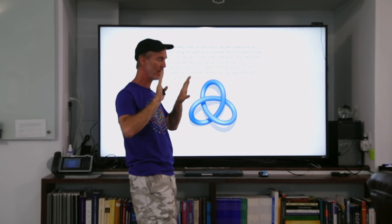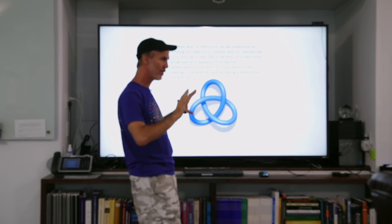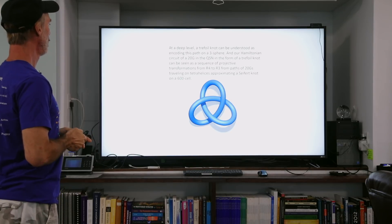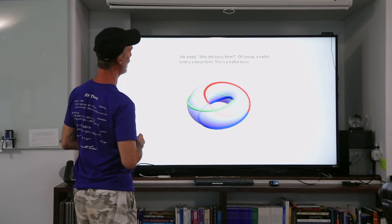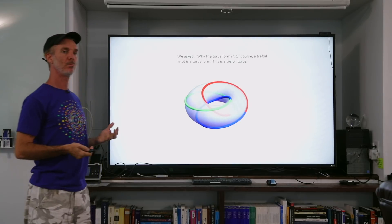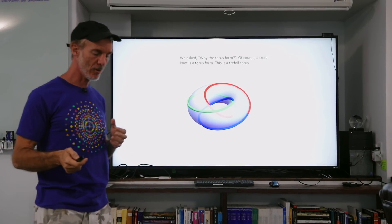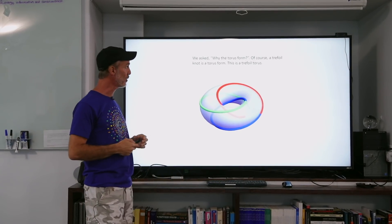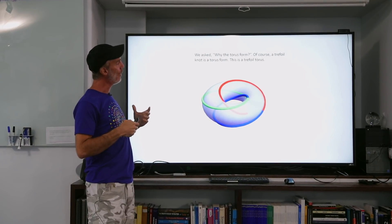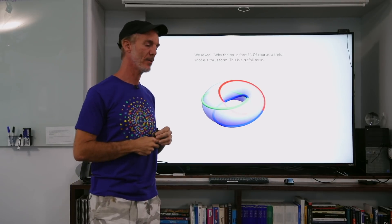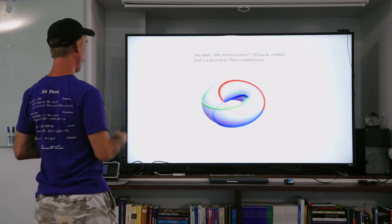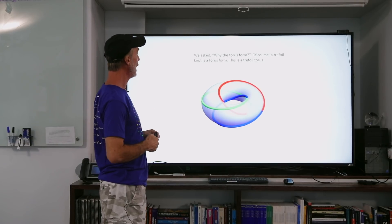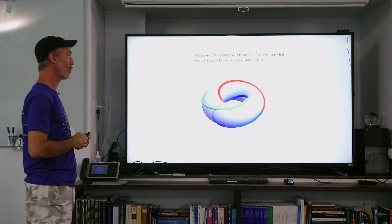As you move your projector through the 600-cell, where it has this Seifert path of tetrahedra trying to become a trefoil in 3D, you understand that in that picture it can't complete — it must be 3+1. To complete the full projection you have to push your projector all the way through the three-sphere circumscribing the 600-cell. So it's not going to all necessarily lay down in R3 in one step. Why the torus form? A trefoil is a torus form. The group of rotations of an irrational projector about a fixed point in the Elser-Sloan quasicrystal is SO4.